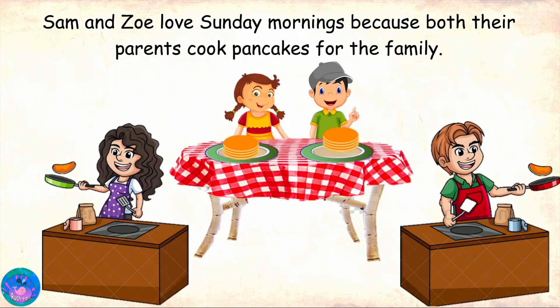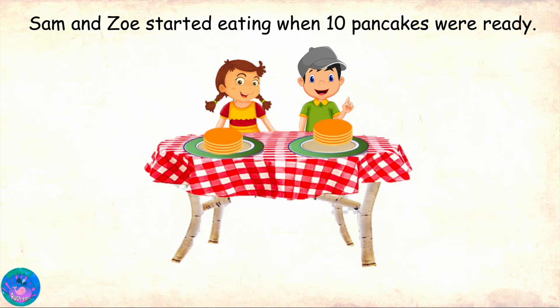Sam and Zoe love Sunday mornings because both their parents cooked pancakes for the family. Sam and Zoe started eating when 10 pancakes were ready. Zoe had 4 pancakes. Sam had 3 pancakes.